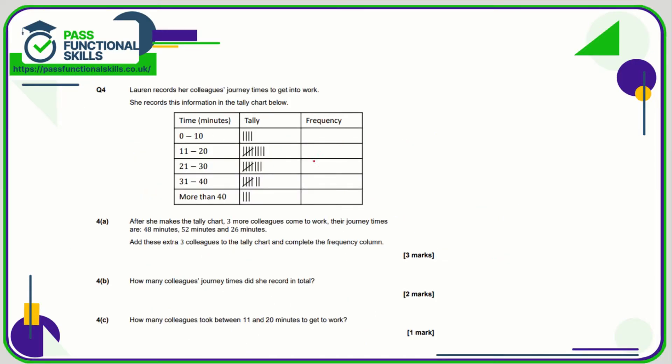Question number four, we've already got the chart here. And after she makes the chart, three more colleagues come to work. And the journey times are 48, so 48 is in the more than 40 category, so I'm going to log that there. 52 is also more than 40, but this is going to be the fifth, so that's going to complete a set of five. And 26 is going to go there. And complete the frequency column. Here we've got four, five plus four is nine, five plus four is nine, five plus two is seven, and a five. How many colleagues took—sorry, how many colleagues' journey times did she record in total? So we just need to add up the four, nine, nine, seven, and five, and that's a total of 34. And between 11 and 20, well we've clearly written that, that is a total of nine.